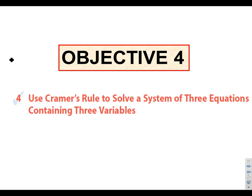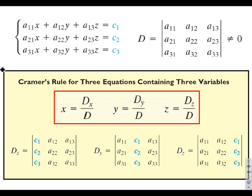There's a Cramer's rule for three by threes as well: it's DX over D for X, DY over D for Y, and DZ over D for Z. You'll end up with four three by three matrices. Notice again that the X coefficient column gets replaced by the solution column for DX, and the same thing applies for Y and Z.